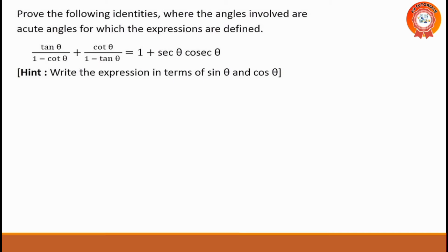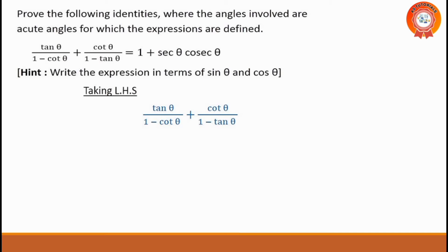We are going to talk about LHS. What is LHS? It is: tan θ divided by (1 minus cot θ), plus cot θ divided by (1 minus tan θ). We will rewrite it in terms of sin and cos. Tan is sin by cos, and cot is cos by sin.